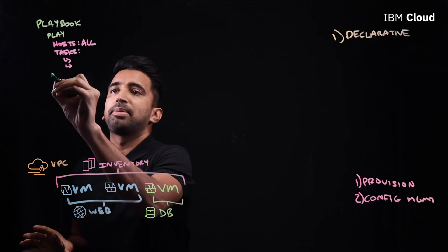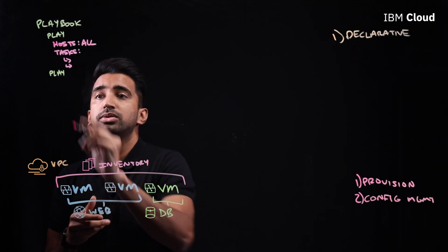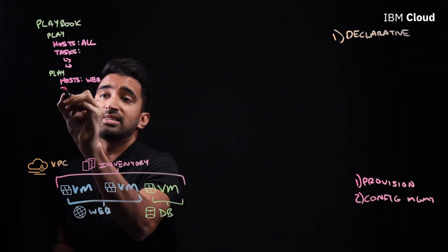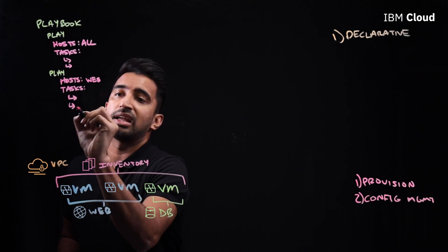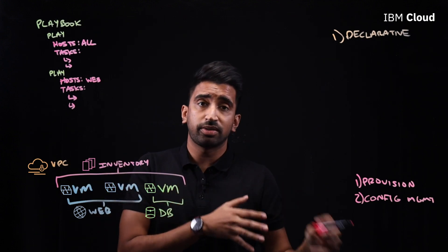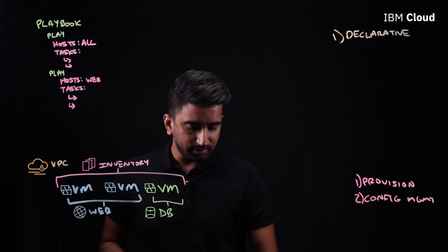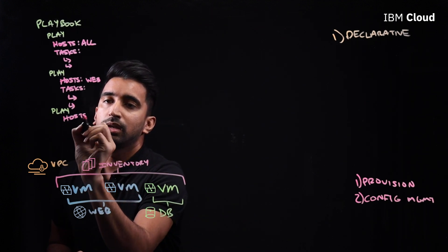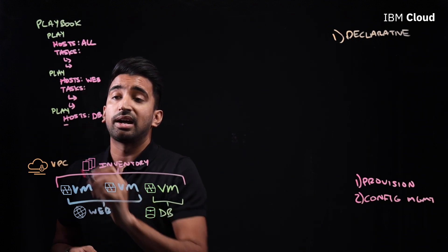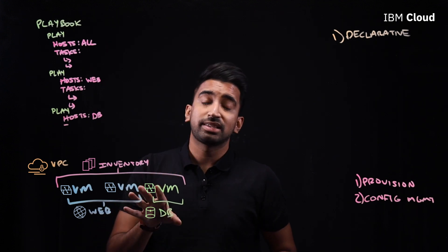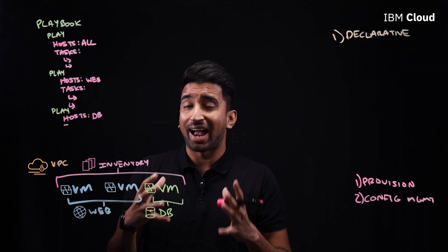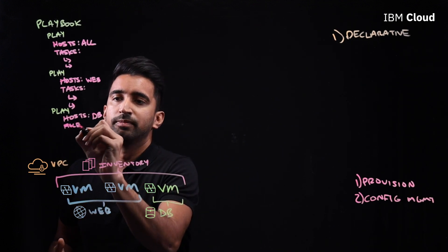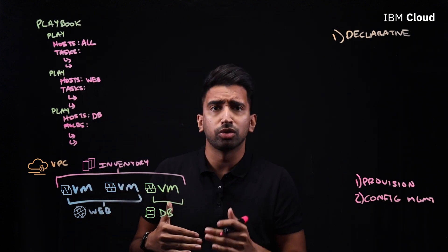Let's create more plays. A second play runs against the 'web' hosts with tasks like installing Go, Python, and other services specific to the web servers. For the third play, the host is set to 'DB', and instead of tasks, let's talk about roles. Ansible roles enable you to group together actions you run multiple times — instead of defining all tasks every time, you just define the roles, which use the underlying modules and tasks needed.